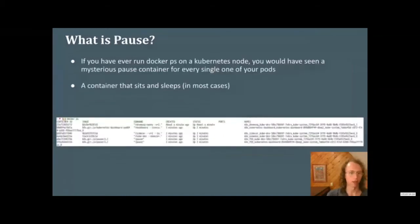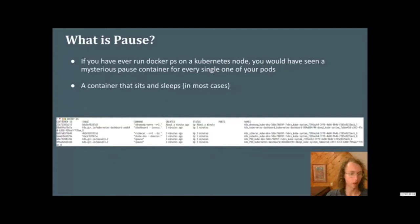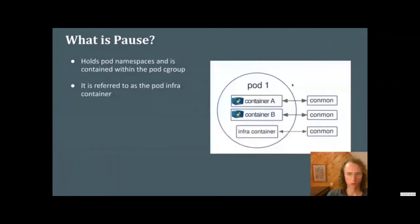So what is the pause? If you run Docker and you've ever run Docker PS on your Kubernetes node, you may notice a mysterious pause container. In the bottom of this picture, we have pause 3.2. The pause container sits and pauses — it really doesn't do very much more than that, except at the end of its life. The idea of the pause is to hold the pod-level namespaces and share them with other containers inside of the pod. It's contained within the pod cgroup and is often referred to as the pod infra container.